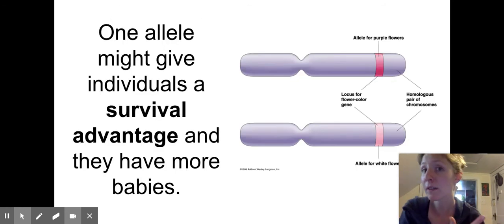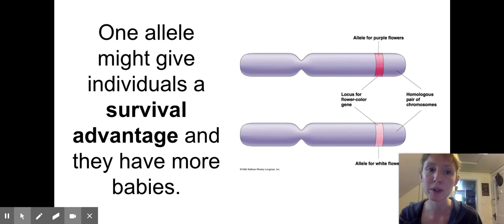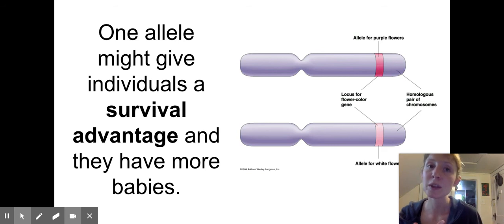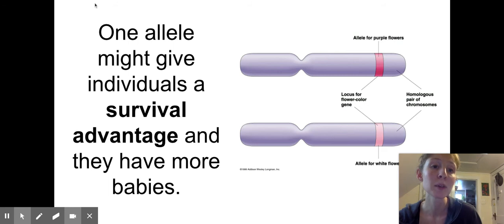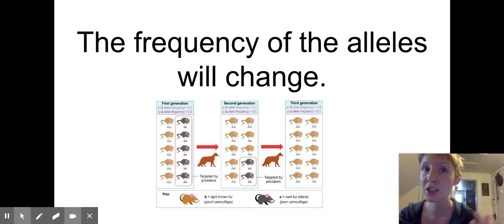One version of a gene — one allele — might be a little bit better than another in terms of its ability to help you survive and reproduce. So if one allele gives individuals a survival or reproductive advantage, that allele is going to increase in the population as it is passed on more. Over time, the frequency of the alleles might change and the overall population might change.